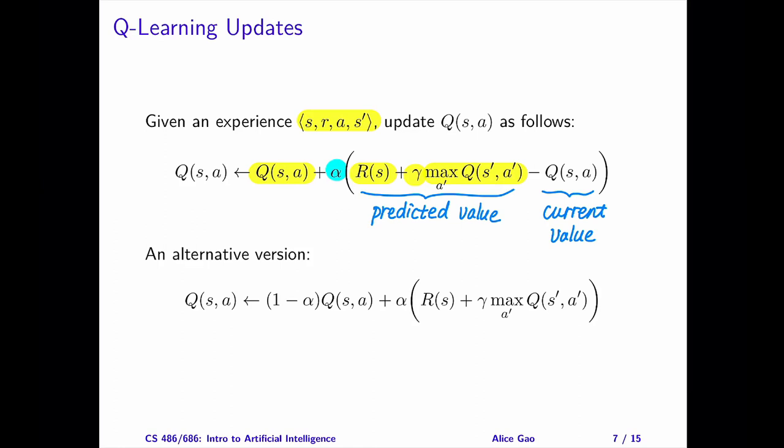Alpha is a value between 0 and 1. Since we multiply the temporal difference error by alpha, the change in the Q value is only a portion of the temporal difference error.